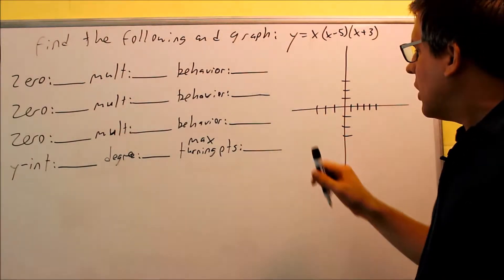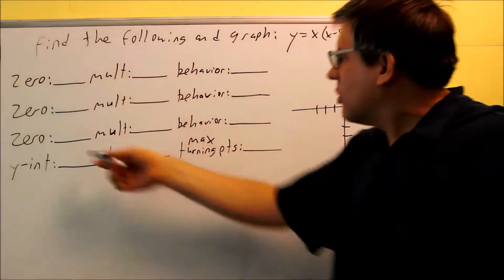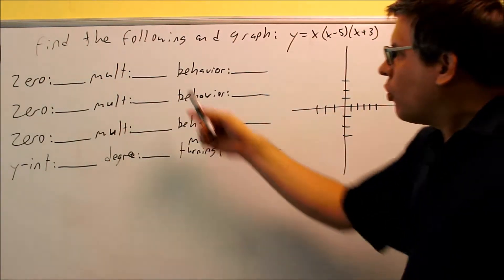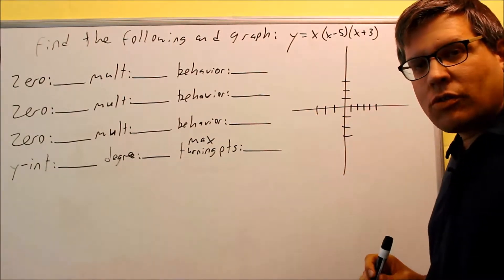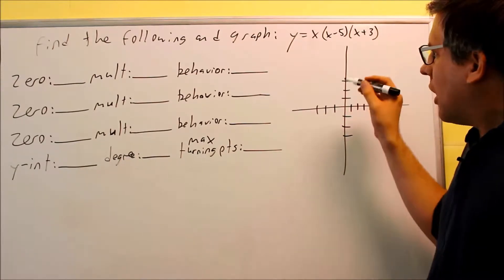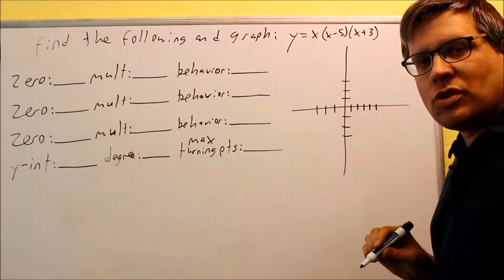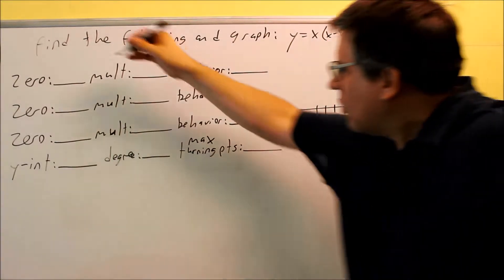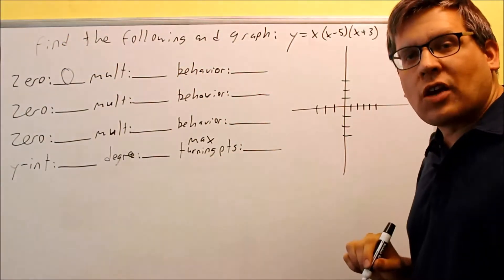We want to find all this information and then get the graph. We want to find the zeros of this one — in other words, the x-intercepts. We want to find the multiplicities and the behaviors. The first thing is to look at what makes each individual part equal to zero. If I set that part equal to zero, I'm going to get zero. So zero would be your first x-intercept.